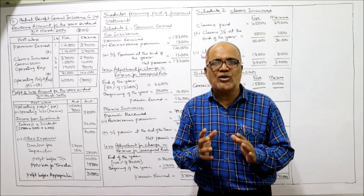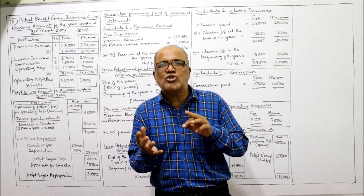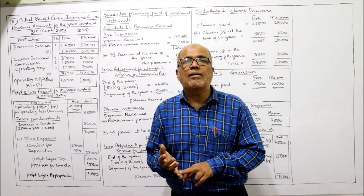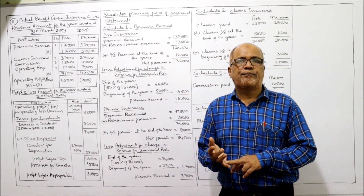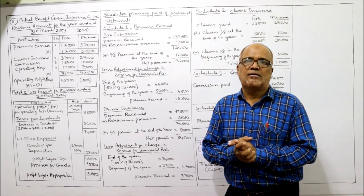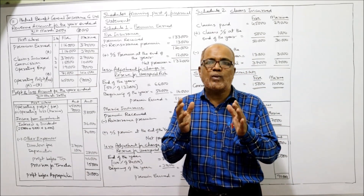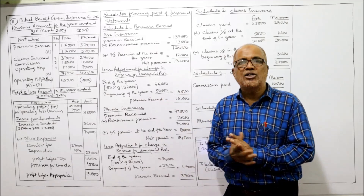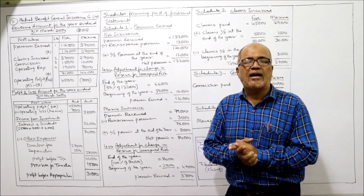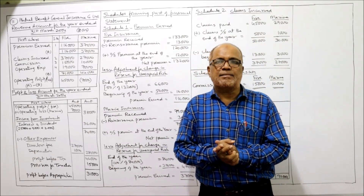Don't forget to subscribe. In this subject of corporate accounting I have completed all the topics: company liquidation, amalgamation of companies, internal reconstruction and acquisition of business, banking companies accounts, insurance claims, life insurance company accounts, and lastly general insurance company accounts. Watch the videos and get your confidence on the subject. We will take up the next subject in the next video.